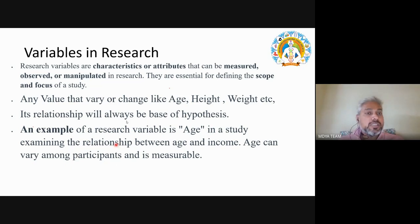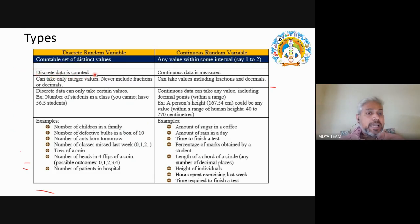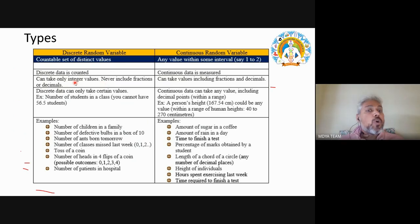Now let's understand the types of variables. There are many types, but first we look at discrete and continuous variables. In discrete variables, we count, and in continuous variables, we measure. Discrete variables are always whole numbers — they never include fractions or decimals. Continuous variables are represented in fractions and decimals.